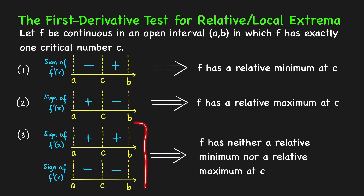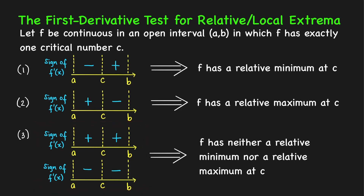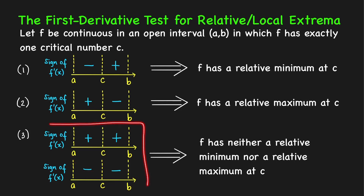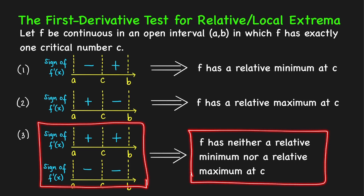Lastly, we have two cases where the derivative has the same sign on both sides of c. If the derivative is positive on both sides, f is increasing on both sides of c. If the derivative is negative on both sides, f is decreasing on both sides. In either case, f has neither a relative minimum nor a relative maximum value at c.